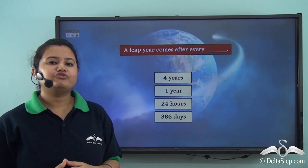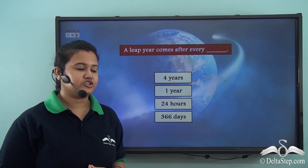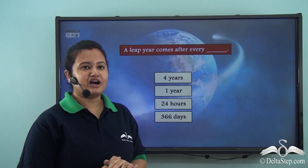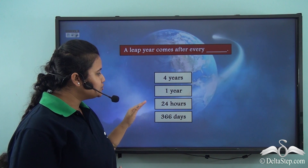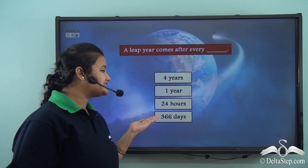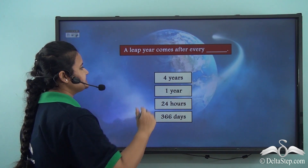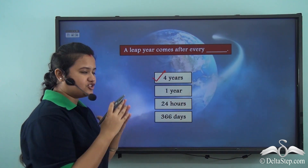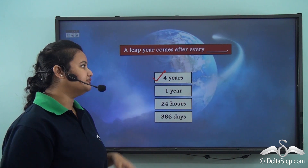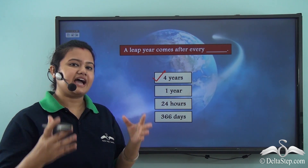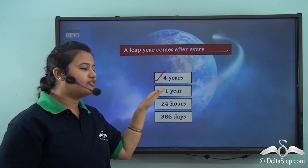Before we proceed, let us answer this question: a leap year comes after every — 4 years, 1 year, 24 hours, or 366 days? The correct answer is 4 years. We just calculated that a leap year comes after every 4 years and has 366 days.